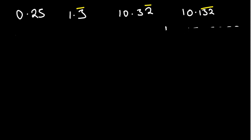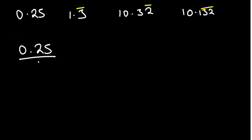Beginning with the first one: 0.25. The first thing we want to do is move the decimal point to after the last digit. It has to move one, two places, so we need to multiply by 100. Remember this number is being divided by 1, so we're working with the fraction 0.25 over 1.